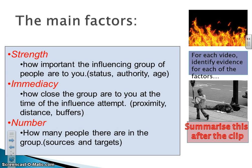And then finally, the number of people. For example, if your friend is asking you to do something you don't want to do, how close a friend they are relates to strength — if they're your very best friend, it might have more impact because you don't want to let them down, whereas if it's just someone from college you vaguely know, you might feel fine ignoring them. Immediacy again is the text message versus in-person distinction. And with number, is it one friend asking you or eight of your friends? The more people there are, the more pressure you will feel.